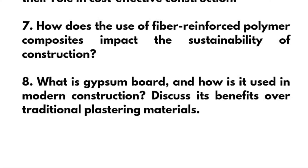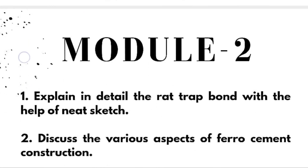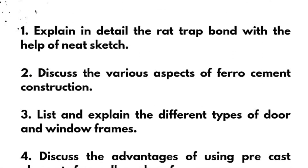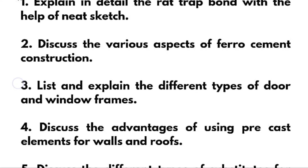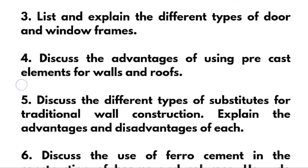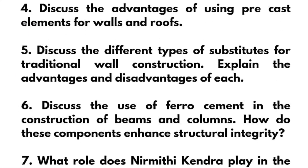Discuss the benefits of gypsum board over traditional plastering materials. Coming to Module 2: explain in detail the rat trap bond with the help of a neat sketch and discuss the various aspects of ferro cement construction. List and explain the different types of door and window frames and discuss the advantage of using precast elements for walls and roofs.